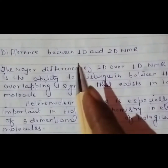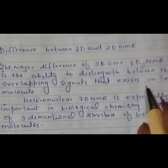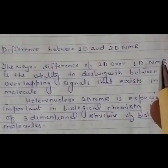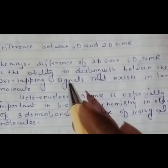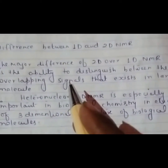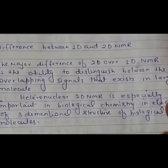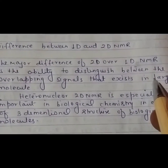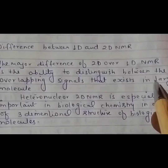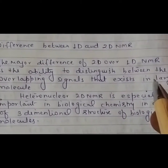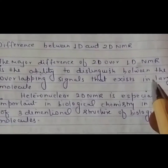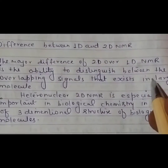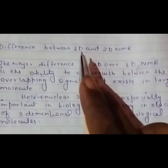The major difference of 2D over 1D NMR is the ability to distinguish between the overlapping signals that exist in larger molecules. Larger molecules such as proteins and carbohydrates show various types of signals — both small and large — which cannot be clearly resolved in 1D NMR.